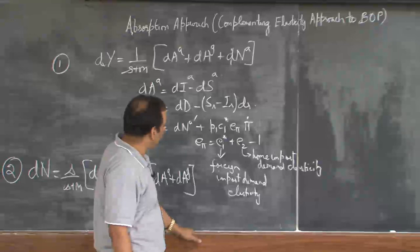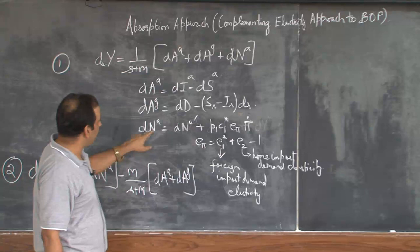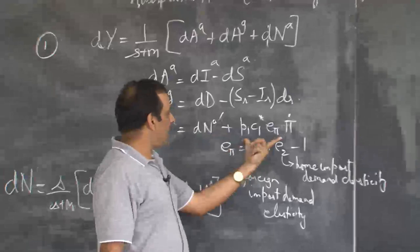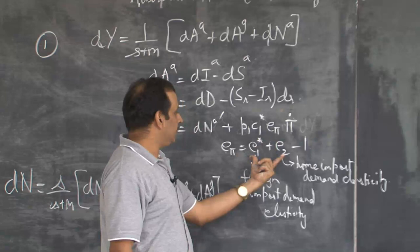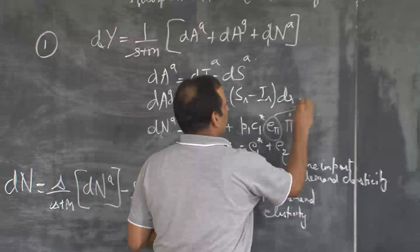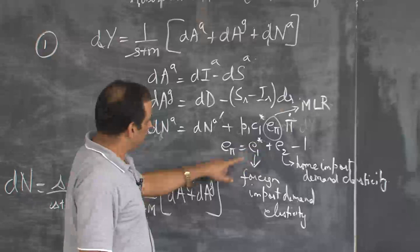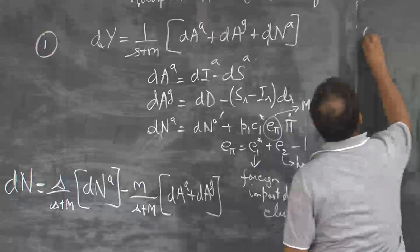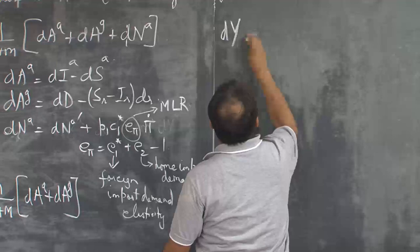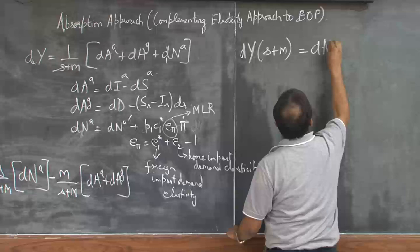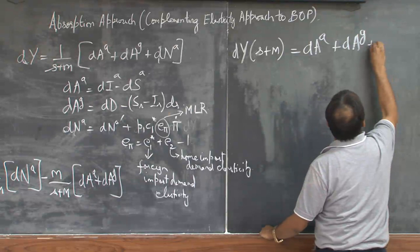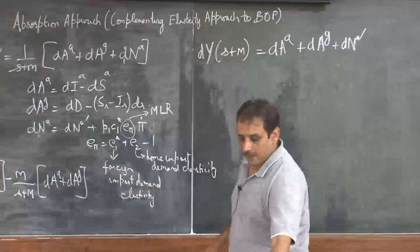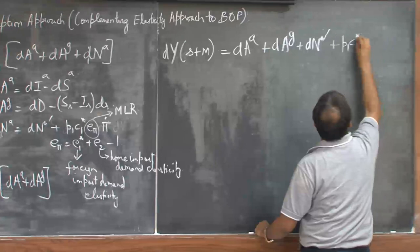The only change done here is that dN_A is now split into dN_A-dash — the autonomous change in net exports — and something which is induced, because the elasticities come into picture. This is the Marshall-Lerner-Robinson (MLR) term, which is E₁* plus E₂ minus 1. So then dy times (s + m) equals dA_A + dA_G + dN_A-dash + P₁C₁* E_π π-dot.